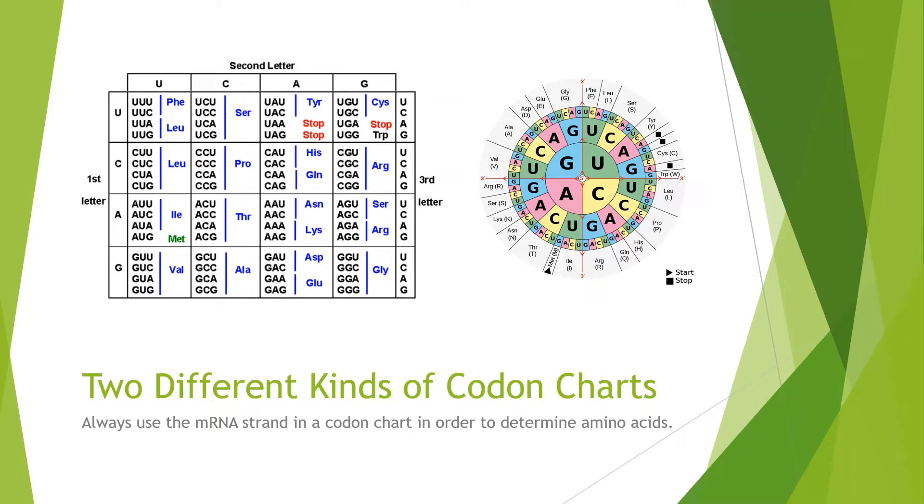Above are two different kinds of codon charts. The left is a rectangular-shaped codon chart, while the right is a circular-shaped codon chart. Both will tell you the exact same information, but no matter what kind of codon chart you're using, you always need to use the mRNA strand in a codon chart to determine the amino acids. If you try using tRNA, you're going to get the completely wrong protein, and if you use DNA, that's also going to be completely wrong, especially if you are using DNA that has codon sequences with thymine or T in it, because on these codon charts, there is no T. Instead, there is U for uracil. Always use mRNA for codon charts.